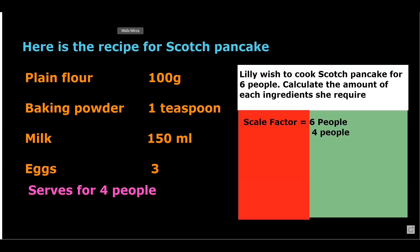What is scale factor? For finding the scale factor, we will select the quantities which we know. Here, we know that we need to find ingredients for 6 people, and we already know the ingredients for 4 people. So, scale factor will be 6 divided by 4, which gives you 1.5.